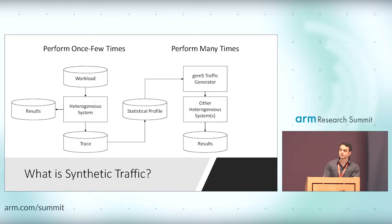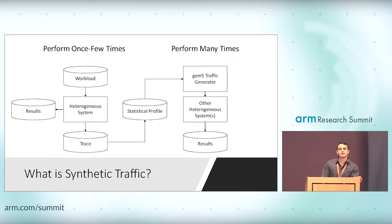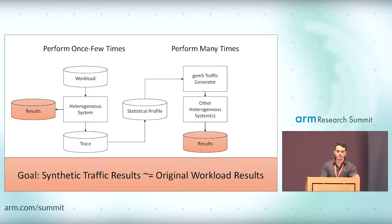What we can also do is create a statistical profile of that trace. Then we can take that statistical profile, and GEM5 has a traffic generator that will synthetically create traffic based off of the profile and inject it into another heterogeneous system. The key thing is that we have maybe one trace or a handful of traces that generate this statistical profile, and using one profile, we can evaluate many heterogeneous systems at once. The goal is that results from the statistical profile are similar to those from an actual or simulated system.